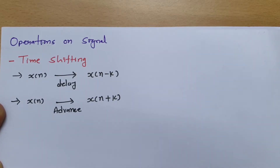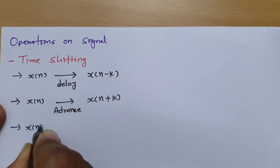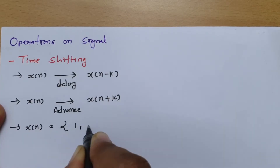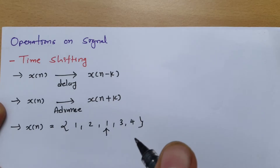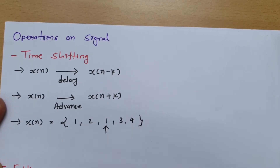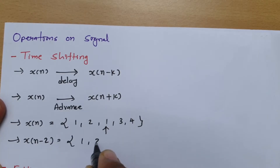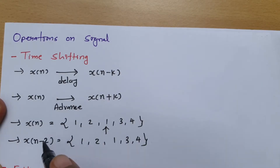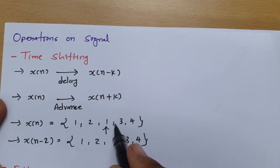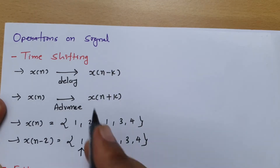Let us understand this with an example. Say we have signal x of n given by the sequence {1, 2, 1, 3, 4} with the reference here. If I want to delay by doing x of n minus 2, the sequence remains the same {1, 2, 1, 3, 4}, but I need to shift the reference by 2 positions to the right to represent the delay.